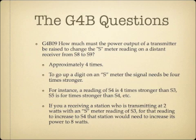How much must the power output of a transmitter be raised to change the S meter reading on a distant receiver from S8 to S9? The answer is approximately four times. To go up one digit on an S meter, the signal needs to be four times stronger. For example, S4 is four times stronger than S3. If a station transmits at two watts with an S3 reading, it would need to increase to eight watts to reach S4.